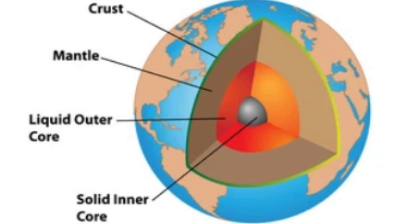During the early stages of Earth's formation, intense heat and gravitational forces led to the differentiation of materials, with lighter elements rising to form the primordial crust. This initial crust was likely thin, mafic in composition, and subjected to intense bombardment by asteroids and meteorites. Over time, the Earth continued to accrete material, leading to the formation of larger landmasses and the differentiation of the crust into continental and oceanic components — lighter granitic continental crust and heavier basaltic oceanic crust.